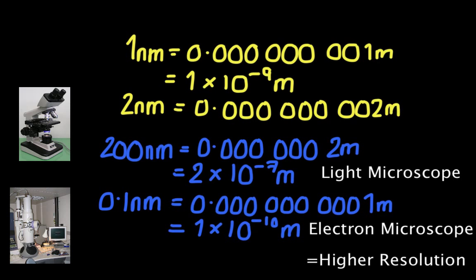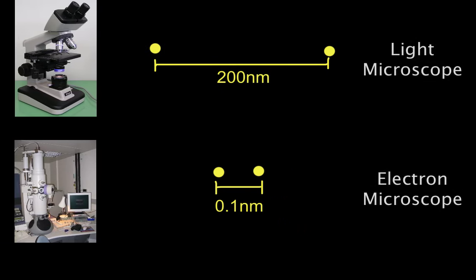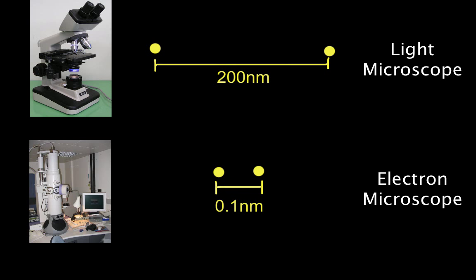This is a bigger number, 2 times 10 to the minus 7 metres. And that's because it can only distinguish between two points that are further apart than the two that the electron microscope can distinguish between.